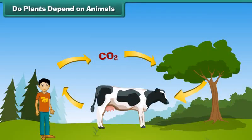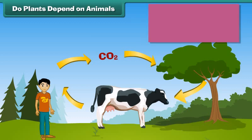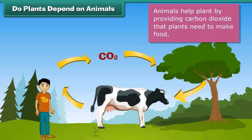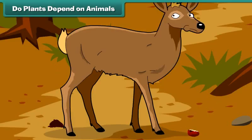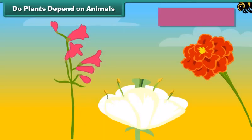Do plants depend on animals? Animals get food, oxygen and shelter from plants. Do they give anything to plants in return? Yes. Plants need carbon dioxide to produce their food. When animals breathe out, they release carbon dioxide and help the plants in making their food by the process of photosynthesis. Plants depend largely on animals to produce their seeds via seed dispersal. Let us see how.